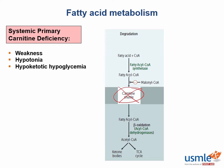Why would they be hypoketotic? During times of hypoglycemia, our body turns to fatty reserves for energy. If the carnitine shuttle isn't working, we get a toxic buildup of fatty acyl-CoA stuck in the cytoplasm. This fatty acyl-CoA cannot be converted into ketone bodies or enter the TCA cycle, leading these patients to be hypoketotic when hypoglycemic.